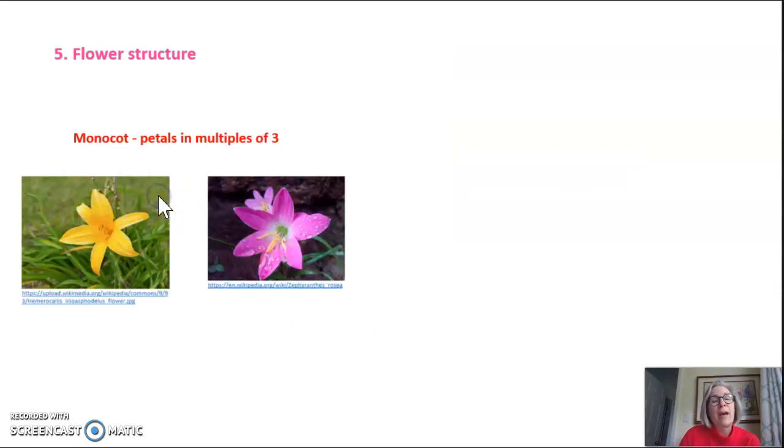The flower structure differs dramatically between our two types of flowering plants. In a monocot the flowers have petals in multiples of three. So you can see you have one, two, three, four, five, six. Therefore this is a monocot.